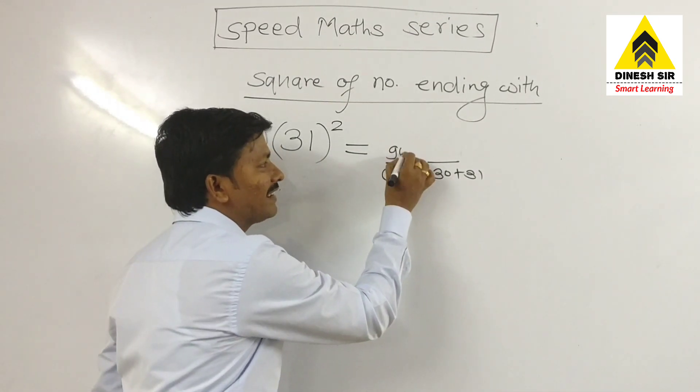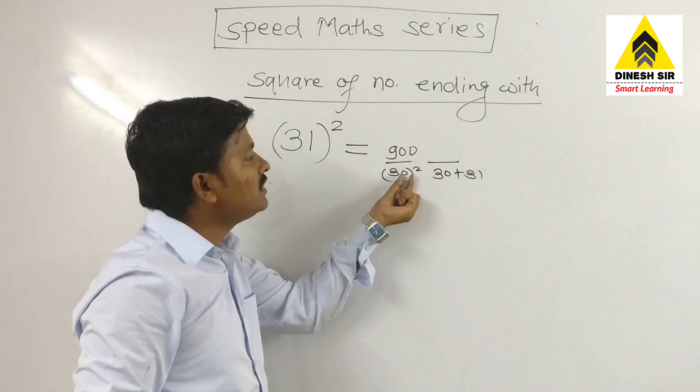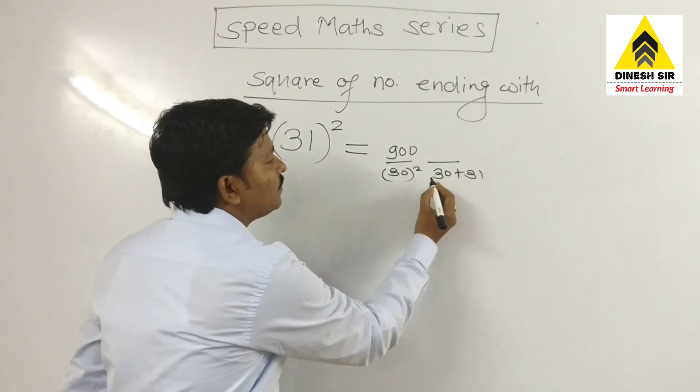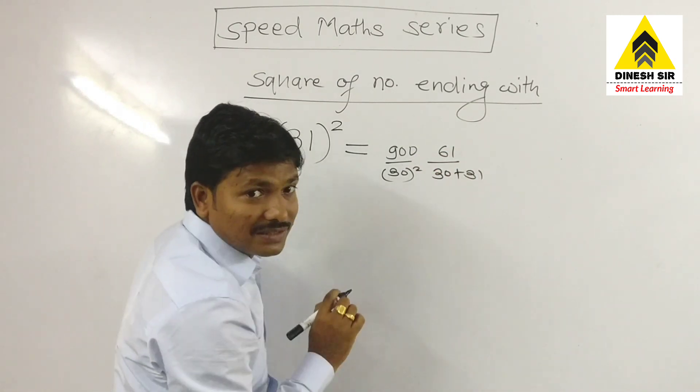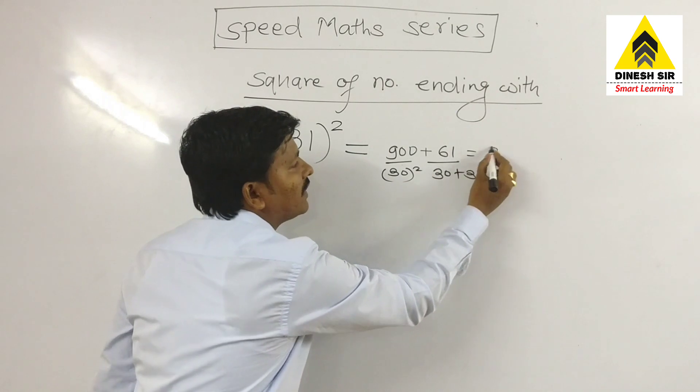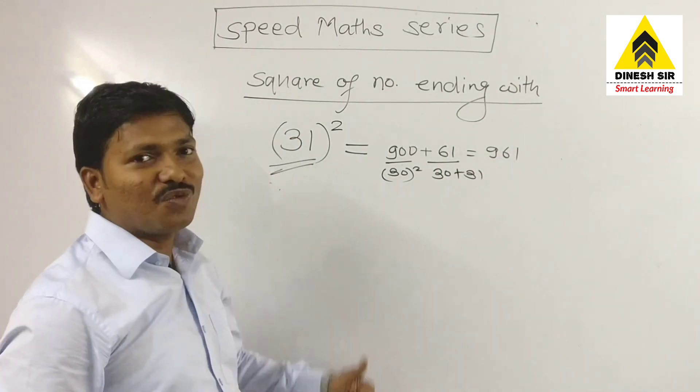Thirty square is nine hundred. If you don't know thirty square, then take square of three and one zero becomes double—nine hundred. Thirty square is nine hundred, and thirty and thirty-one becomes sixty-one. Now add both numbers, you get nine sixty.